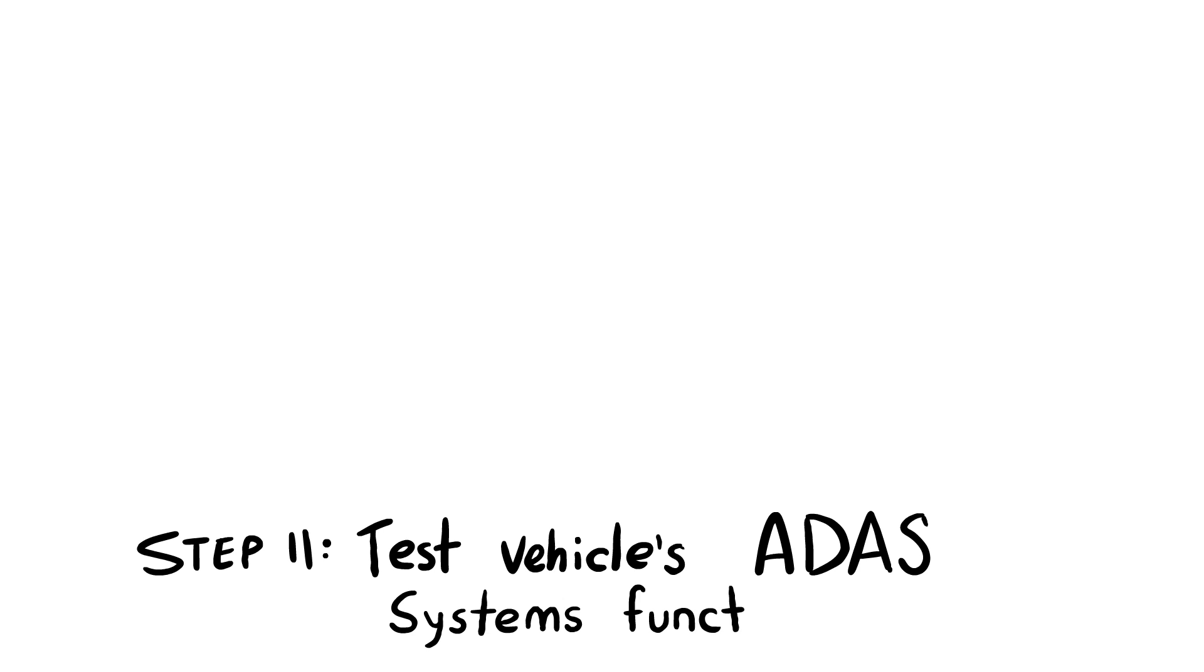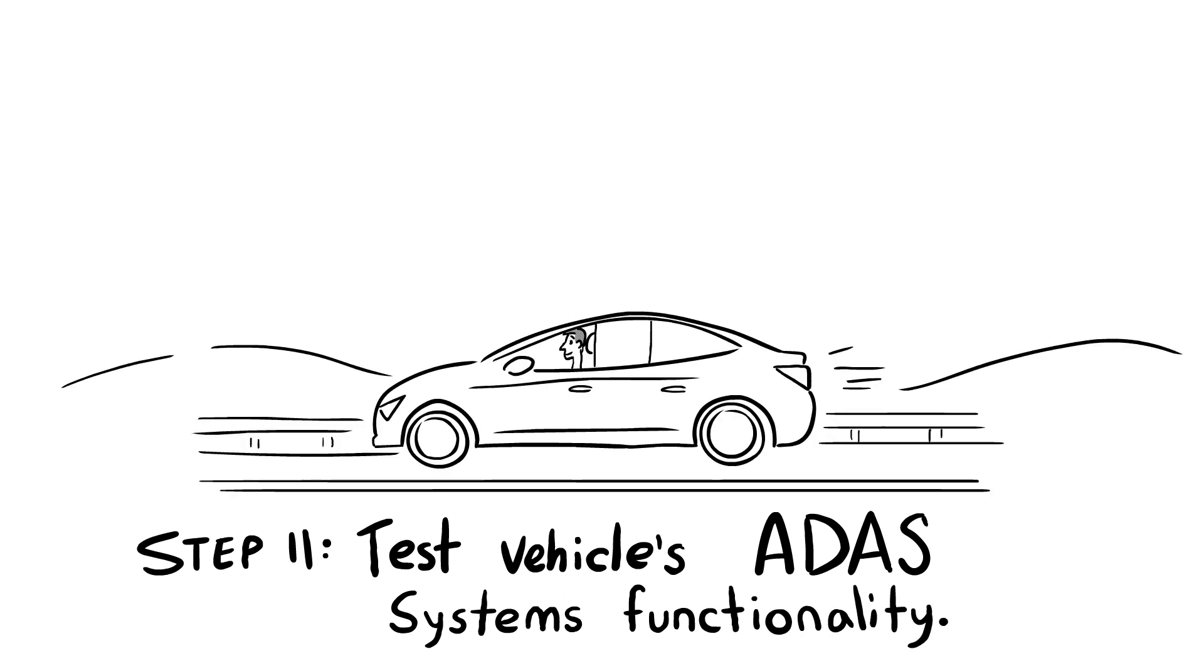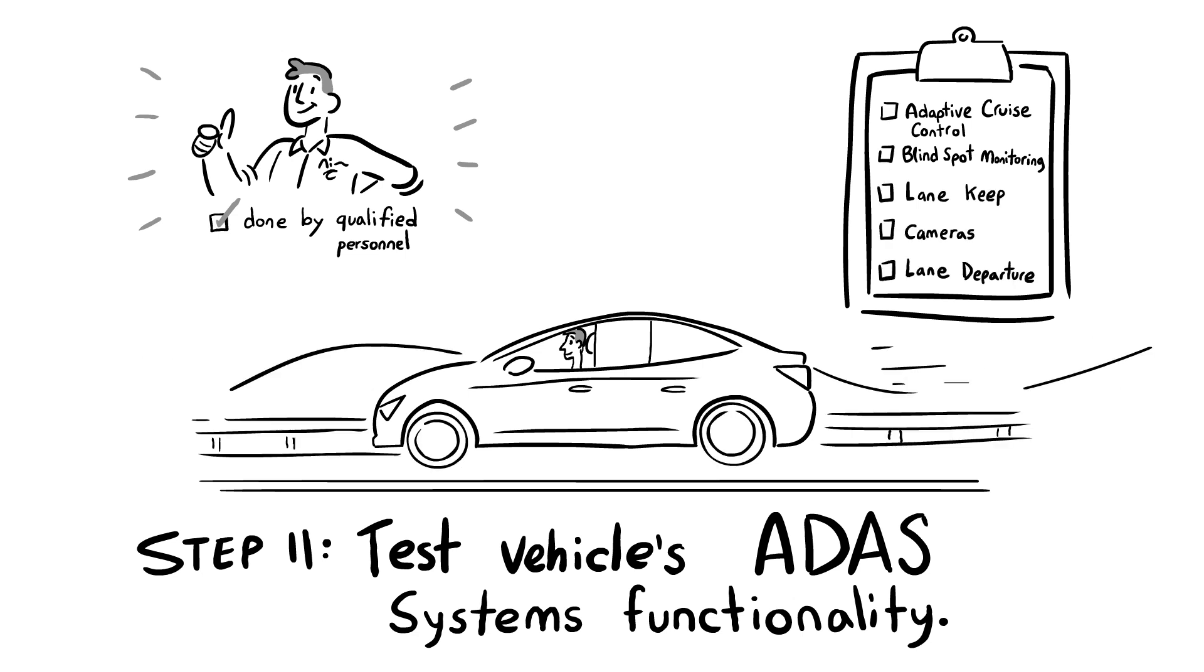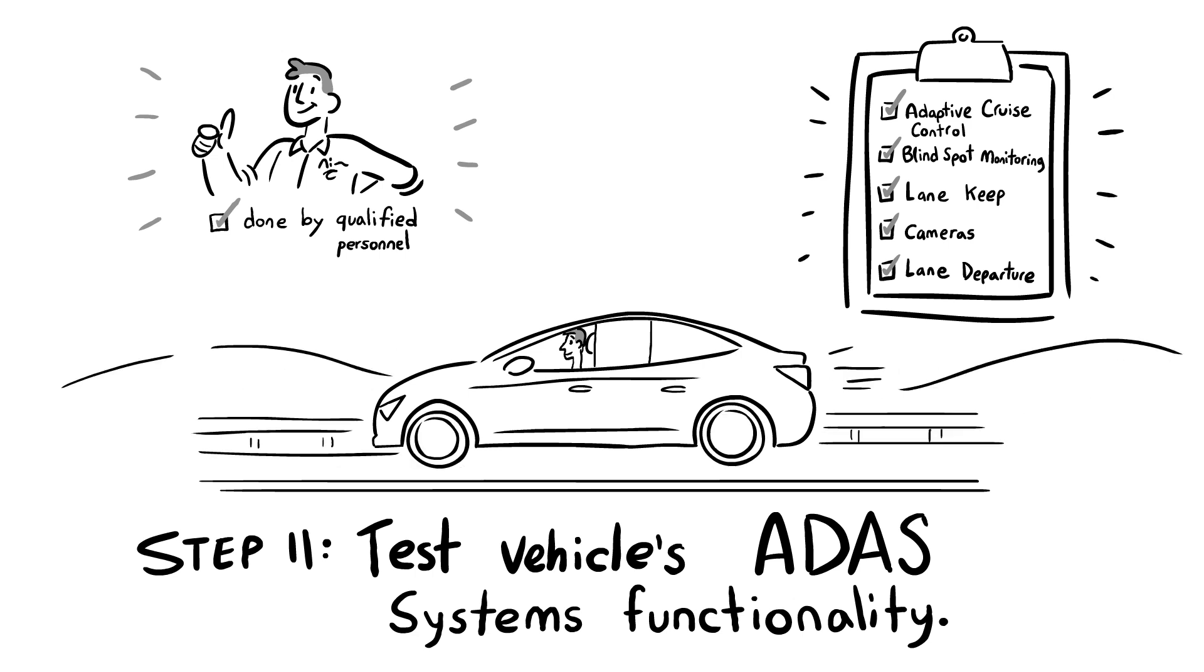Step 11: Test the vehicle's ADAS systems functionality by performing a dynamic systems verification, also known as DSV, in conjunction with a road test. A DSV identifies and confirms the performance of all the vehicle's ADAS systems and features such as adaptive cruise control, blind spot monitoring, lane keep and lane watch systems. A complete list of the features of each vehicle can be found in the owner's manual or vehicle service information. Only qualified personnel who have become familiar with the vehicle's ADAS systems and functionality should perform a DSV.